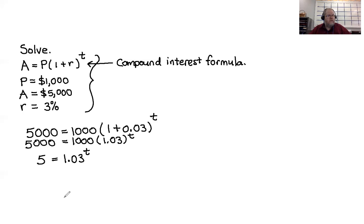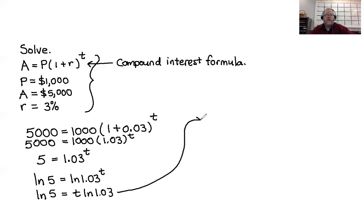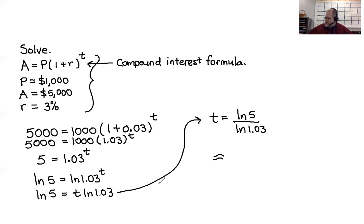You can use any logarithm — I'm going to use the natural logarithm of both sides. So ln of 5 equals ln of 1.03 to the T. The power property brings down T: ln of 5 equals T times ln of 1.03. Dividing both sides by ln of 1.03, the exact value is T equals ln(5) divided by ln(1.03).